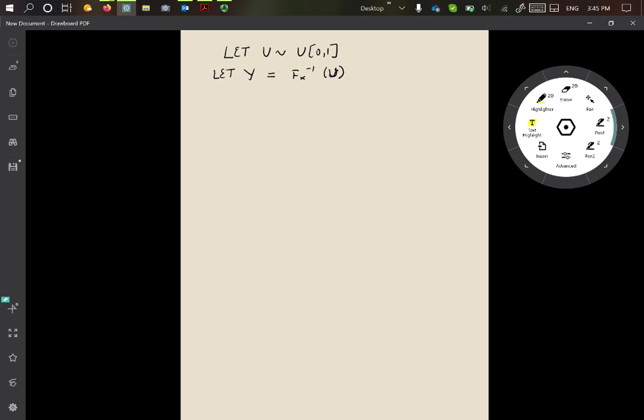So that is the precise statement. We want to show that Y is distributed essentially the same as X. In other words, its CDF is F_X, F sub X, with no apostrophe there.